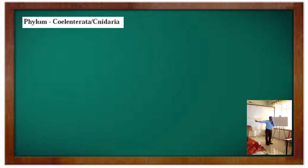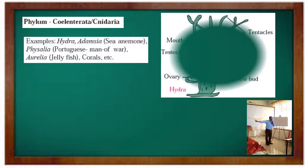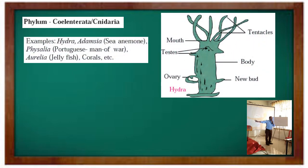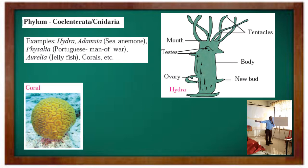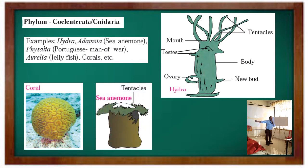Cnidoblasts inject toxin into the body of prey and are also useful for protection. Examples include Hydra, Adamsia (sea anemone), Physalia (Portuguese man-of-war), Aurelia (jellyfish), and corals. You can see here images of hydra, coral, and sea anemone.